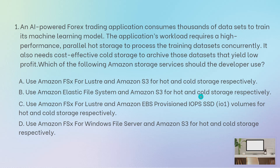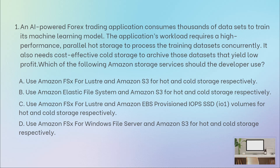Now let's see why the other options are incorrect. Option: use Elastic File System and S3 for hot and cold storage. We know S3 is correct as a cold storage option. But why is EFS not correct for hot storage? Although EFS supports concurrent access, it does not have the high-performance capability that AI workloads require. That high-performance ability is in FSx for Lustre.